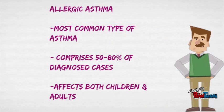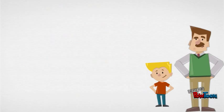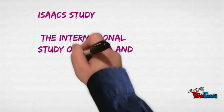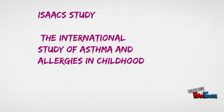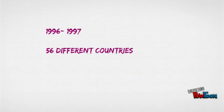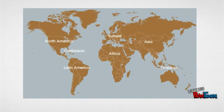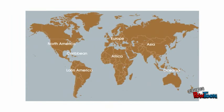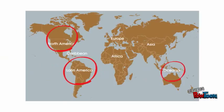Asthma does not only affect adults but is a common chronic condition in children. A large global multicenter study called the International Study of Asthma and Allergies in Childhood, abbreviated as ISAAC, was conducted between 1996 and 1997 in 56 different countries to evaluate worldwide prevalence rates of asthma, allergic rhinoconjunctivitis, and atopic eczema. Researchers found that the prevalence of asthma was highest in North America, Latin America, and Oceania, where more than 20 percent of subjects reported having asthma symptoms.